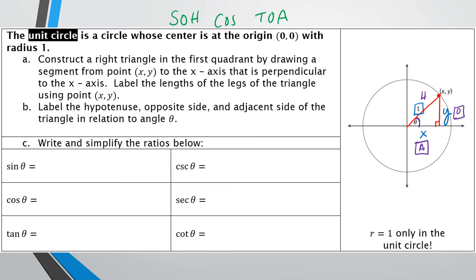Using SOHCAHTOA: sine is opposite over hypotenuse (O/H), cosine is adjacent over hypotenuse (A/H), and tangent is opposite over adjacent (O/A). That's how you learned sine, cosine, and tangent. Now we're going to change it up a little bit — we're going to always use x, y, and r. The ratios are the same; it's just a different label.